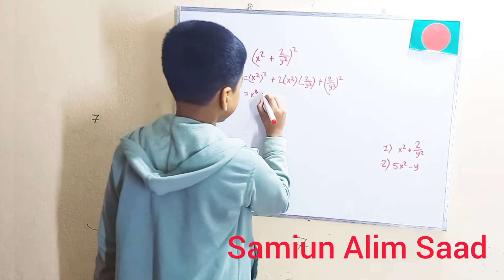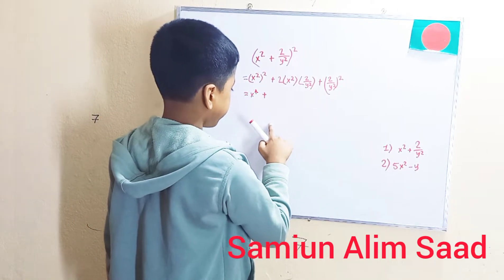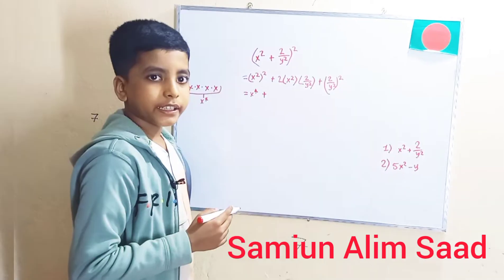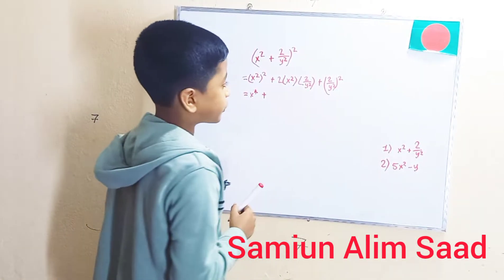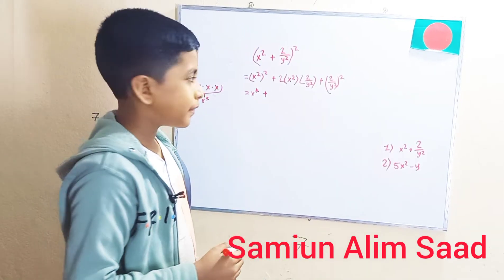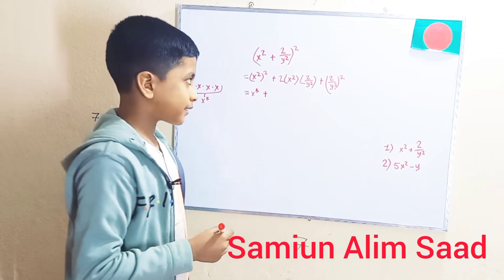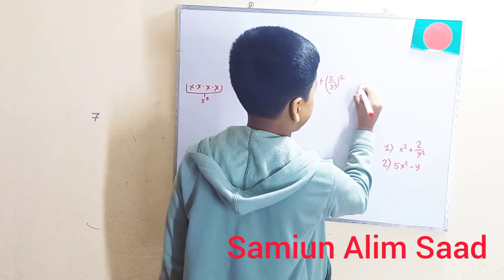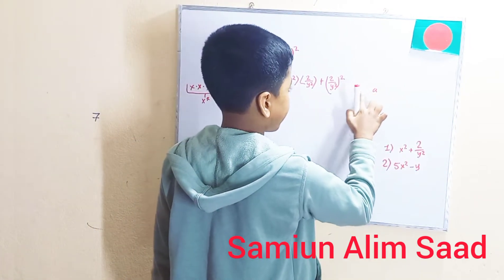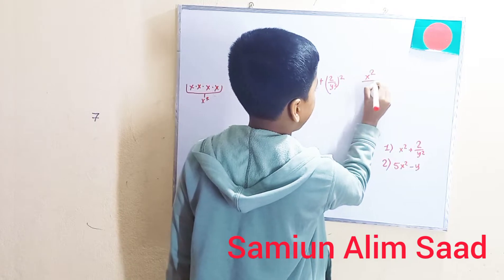So x to the fourth power, plus 2 times x squared times 2 over y squared. Now, here we're going to use a little neat trick. Multiplying these two — we can imagine x squared as a fraction. Remember that a divided by 1 is always equal to a itself. We could apply the same to x squared, so it becomes x squared over 1.